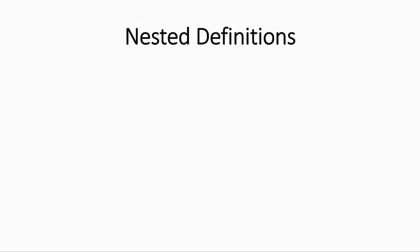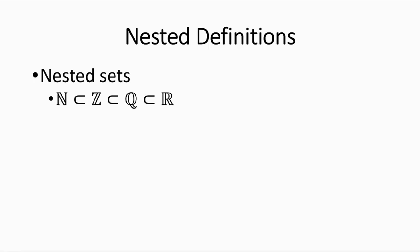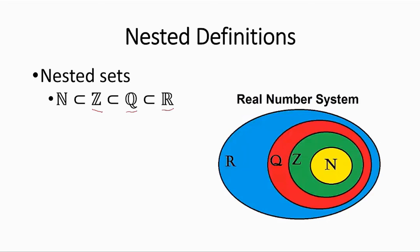Let's look at nested definitions — just like nested sets. The natural numbers are a subset of the integers, which are a subset of the rational numbers, which are a subset of the real numbers. Every natural number is an integer, every integer is a rational number, and every rational number is a real number.